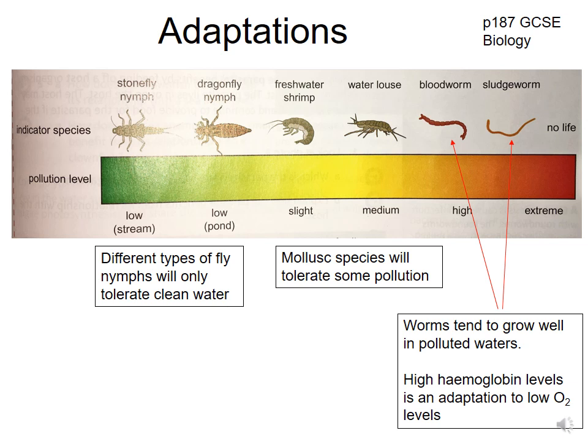So to recap, the indicator species vary according to the levels of pollution in your water. Different types of fly nymphs will only tolerate clean water, so they will be on the clean end. Mollusk species will tolerate some pollution, so you know the water is slightly polluted if you find lots of these around. If you find lots of worms, then you know there are high to extreme levels of pollution due to the lack of oxygen. The blood worms and sludge worms contain very high haemoglobin levels, giving them a reddish colour. This haemoglobin allows them to bind to as much oxygen as possible — a specific adaptation for low-oxygen, polluted water.